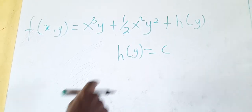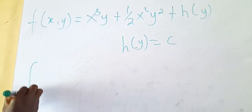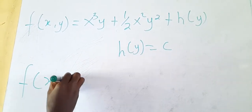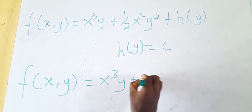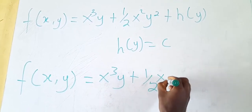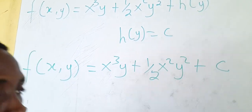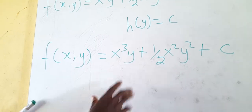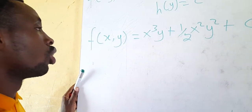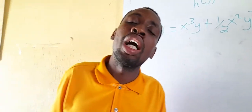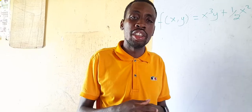Substituting the constant back, our general solution to the differential equation is F(x, y) = x³y + ½x²y² + C. If boundary conditions are given, we substitute them to get the particular solution.